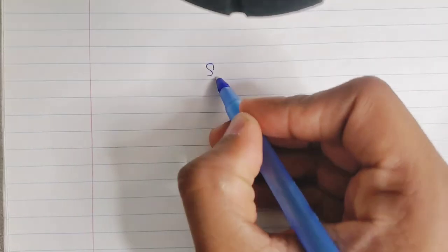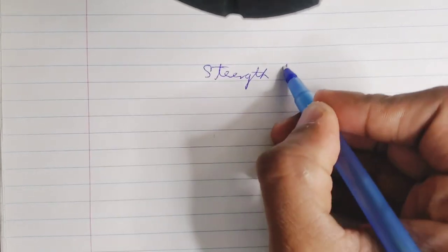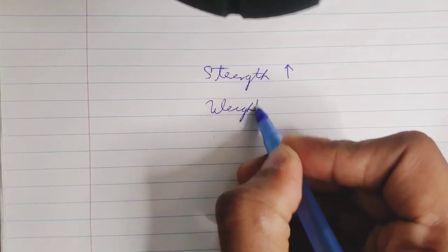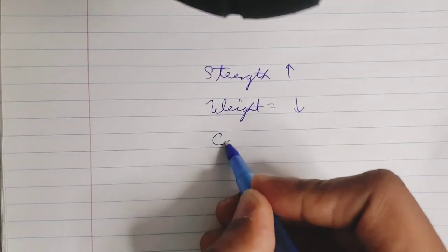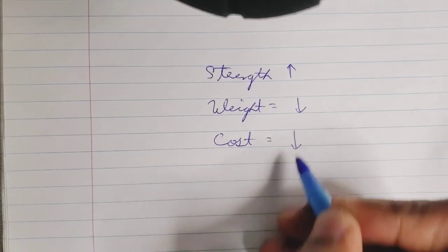Overall, the Warren Truss allows structures to have high strength while minimizing the total weight of the structure, which leads to cost saving for the developers. Thank you very much for your time.